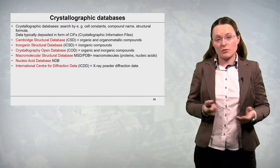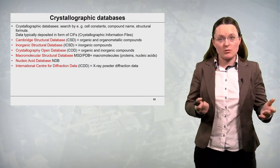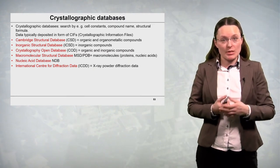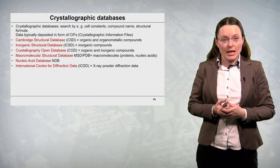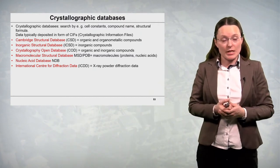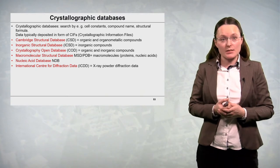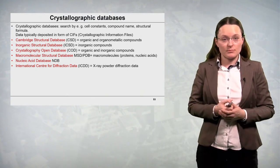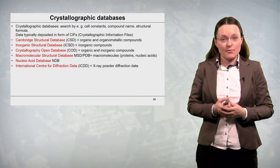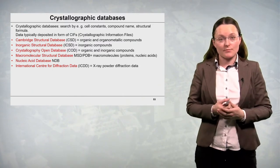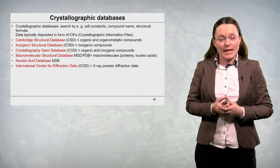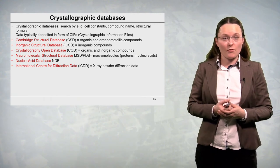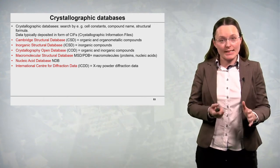If you are searching for data for macromolecules such as proteins or nucleic acid you could use macromolecular structural database MSDPDB. And a dedicated database with data for nucleic acids is the nucleic acid database NDB. We can also search data collected for polycrystalline substances and this is the database of the International Center for Diffraction Data ICDD.